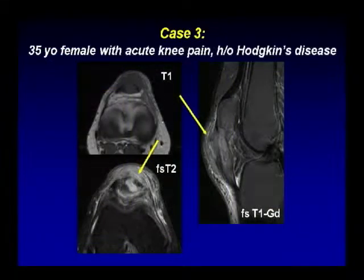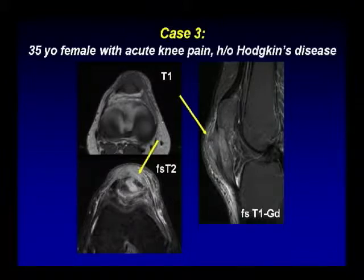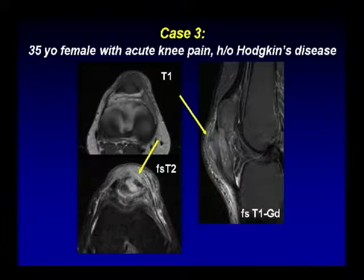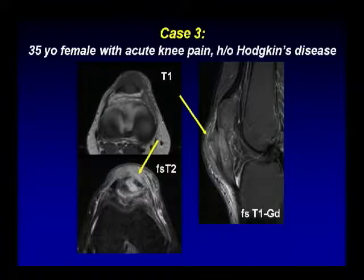Case number three: a 35-year-old woman with acute knee pain and a history of Hodgkin's disease. At the patella and patellar tendon, there is a lesion causing some erosion of the bone — this looks a little bit like a sinus tract. There is extensive swelling of the patellar tendon with bright material on these T2-weighted images.